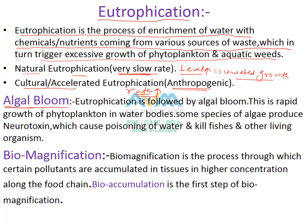Eutrophication is followed by algal bloom, which is the rapid growth of phytoplankton in water bodies. Some algae produce neurotoxins — poisonous chemicals — and when these neurotoxins accumulate in water, they lead to the killing of fish and other living organisms in the water body.